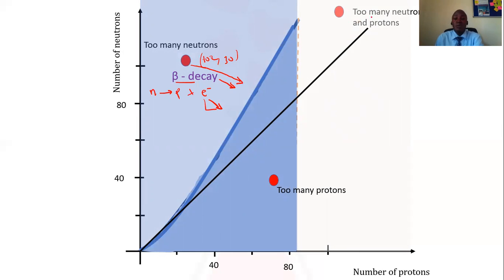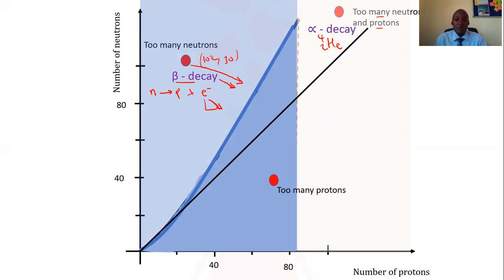Secondly, atoms that have too many neutrons and too many protons are favored by alpha decay. During alpha decay, a positively charged helium nucleus is emitted, decreasing the atomic number by two and the mass number by four. The number of neutrons decreases by two and the number of protons also decreases by two, helping the atom move toward the stability belt.